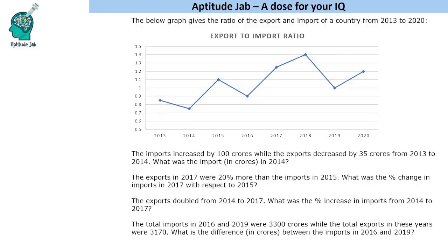Hello everyone, welcome to Aptitude Jab. This is a set based on a line graph — it shows the ratio of exports and imports of a country. The graph shows export-to-import ratio from 2013 to 2020. For example, the ratio is 0.85 in 2013, meaning export divided by import equals 0.85, so export equals 0.85 times import. This is how we read the graph.